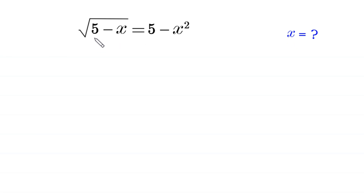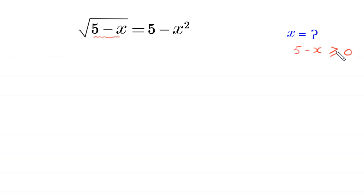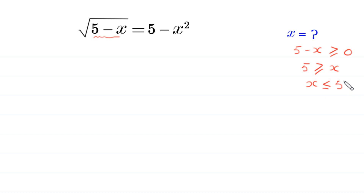Since the expression 5 minus x is under a square root, 5 minus x must be greater than or equal to 0. Moving the negative x to the right hand side, 5 must be greater than or equal to x, meaning x must be less than or equal to 5.